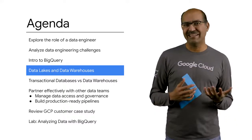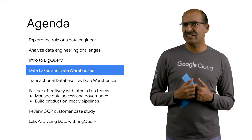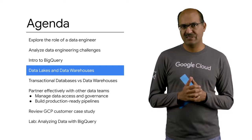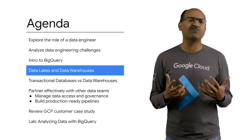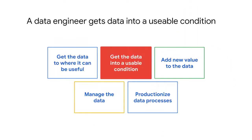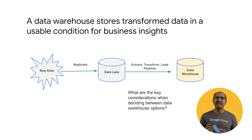We've defined what a data lake is and what a data warehouse is. Let's look at these in a bit more detail. Recall that we emphasized that the data has to be in a usable condition so that someone can use this data to make decisions. Many times, the raw data is by itself not very useful. We said that raw data gets replicated and stored in a data lake.